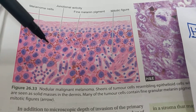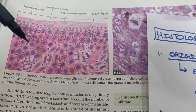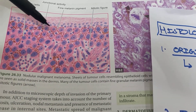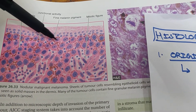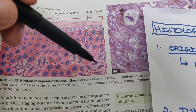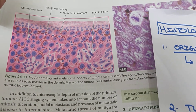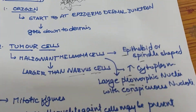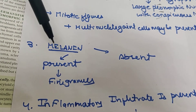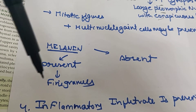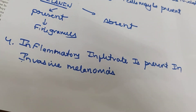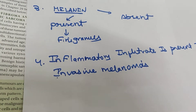The malignant cells are very large with spindle and epithelioid shape, increased cytoplasm, nuclei of different shapes, and very prominent nucleoli. Mitotic figures are also present, as are multinucleated giant cells. Melanin may be present or absent — if present, it appears as fine granules. Inflammatory infiltrate can sometimes be seen in invasive melanomas.